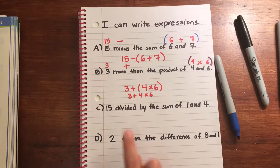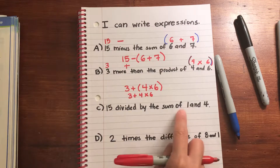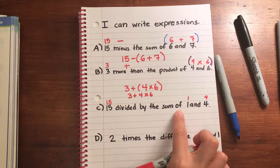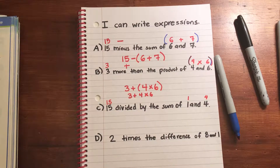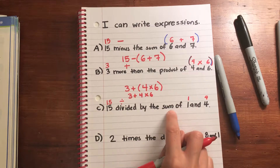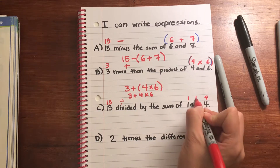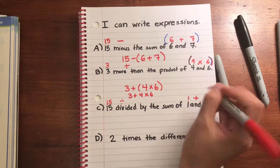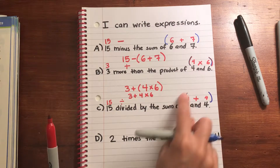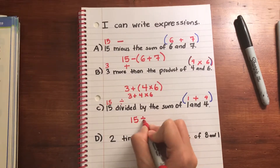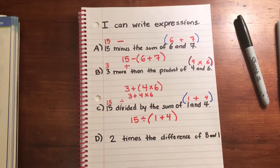Let's look at C: '15 divided by the sum of 1 and 4.' I'm repeatedly reading these again and again so I can understand what I'm reading — multiple reads are totally fine. 'Divided by' is a division symbol. 'Sum of 1 and 4' means I have to add 1 and 4. Without parentheses I would solve 15 ÷ 1 first, so I need to add parentheses: 15 ÷ (1 + 4).